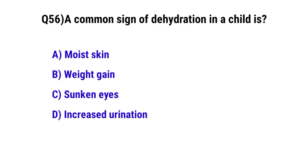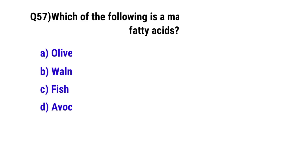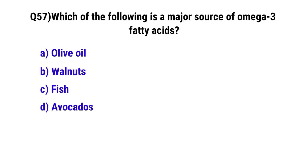Question No. 56: A common sign of dehydration in a child is — the correct option is C: sunken eyes. Question No. 57: Which of the following is a major source of omega-3 fatty acids? The correct option is C: fish.